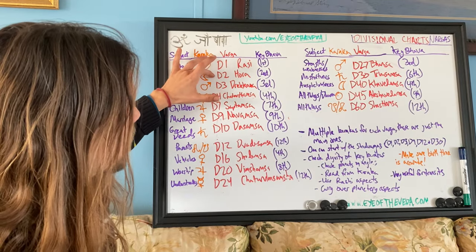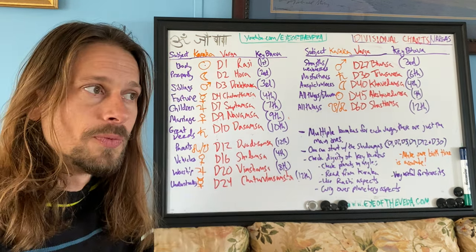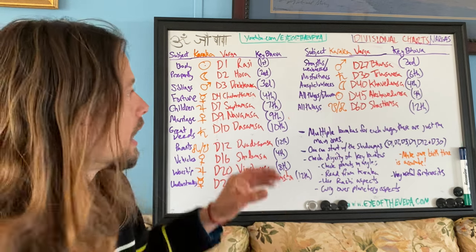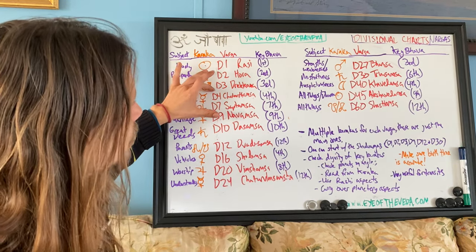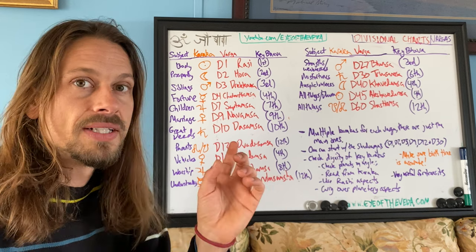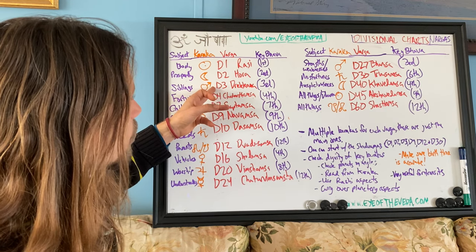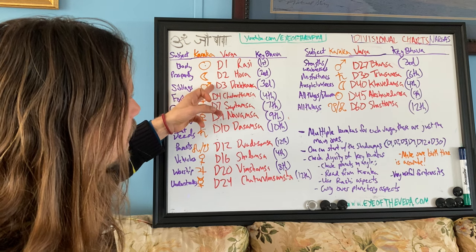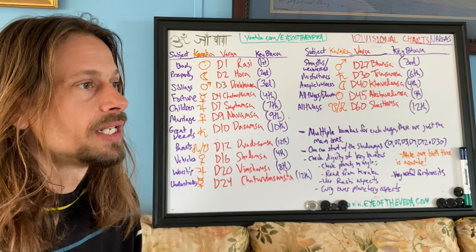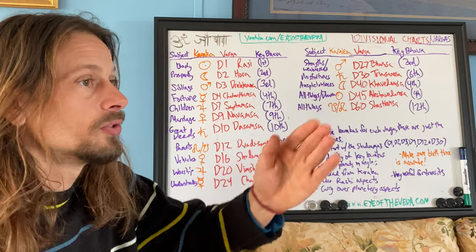The D2 divides those 12 signs into two, so each sign is now divided into two — it's like there are 24 signs, with each sign repeating twice. That's how the Hora chart works. The Drekona chart is the D3, where you divide each normal sign of 30 degrees into three 10-degree portions. For example, if your Sun is in the first part of Aries, it stays in Aries in the D3. If it's in the second portion — 10 to 20 degrees of Aries — it moves to Leo in the D3.